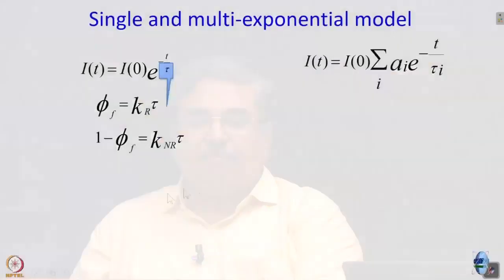If the lifetime is longer, do you expect the fluorescence to be more intense or less intense? You expect it to be more intense, because of the simple relationship: phi_f, the fluorescence quantum yield, is equal to k_r multiplied by tau. Here k_r is the radiative rate constant. A word of caution: very often in literature people say 'radiative rate,' but remember it is a radiative rate constant, not a rate.